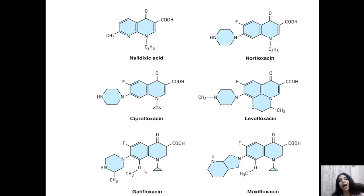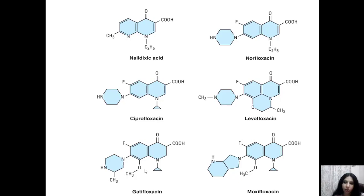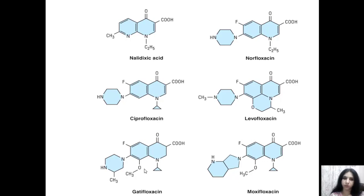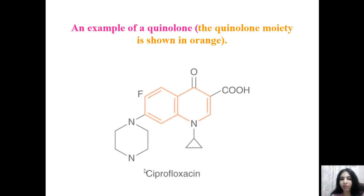Fluoroquinolones are also very useful in management of tuberculosis, used as second-line agents in multiple drug-resistant TB. This is a quinolone moiety — shown in orange — with a fluorine substitution making it a fluoroquinolone. Ciprofloxacin is the prototype drug of the quinolone category. In the 1980s, first-generation fluoroquinolones like ciprofloxacin and norfloxacin began to be used.